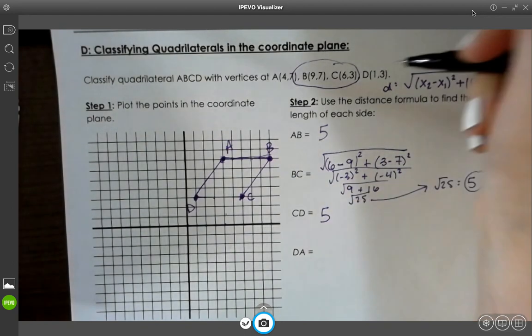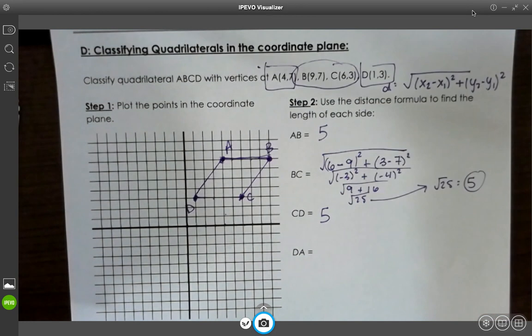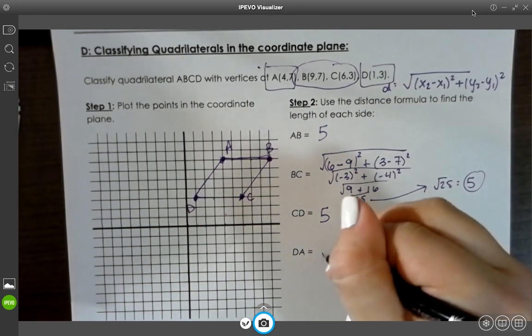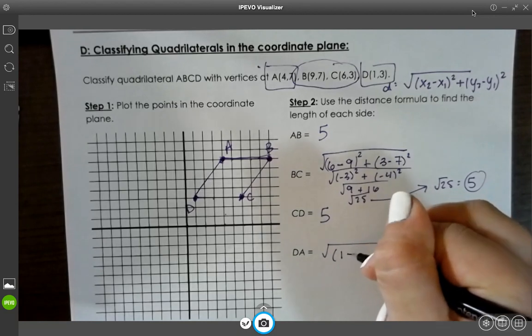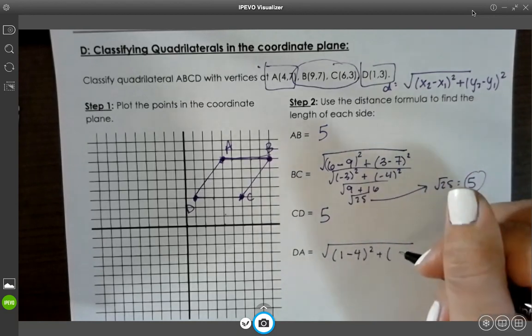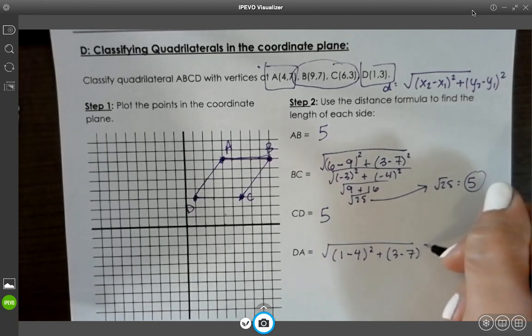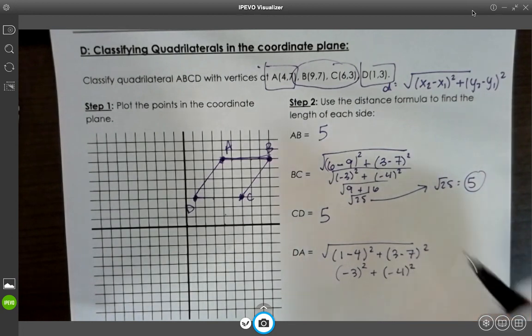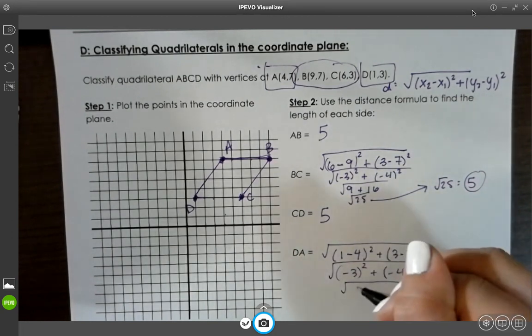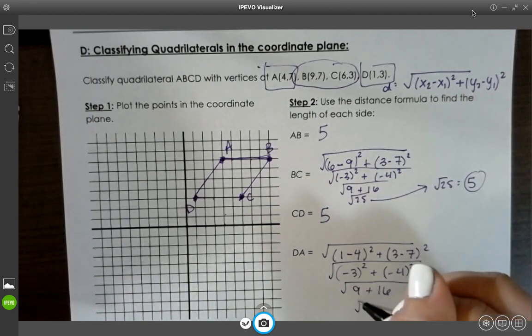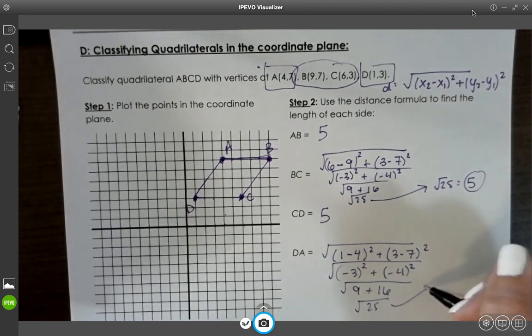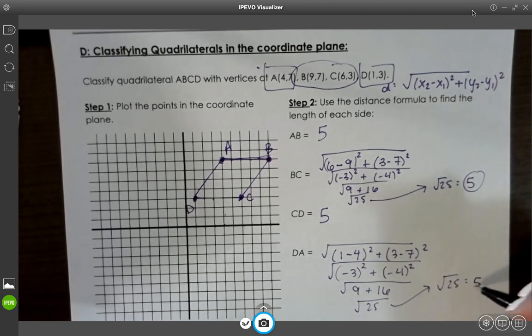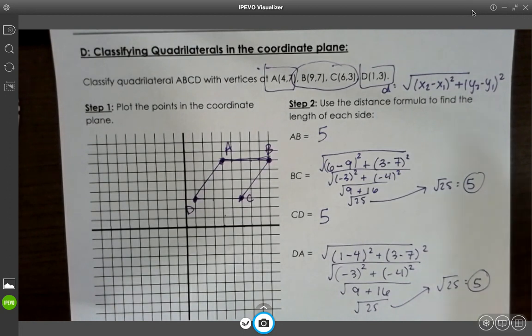So I know the length of BC is 5. And then for DA, I will use this one, D and A. So we have x2 minus x1 squared plus y2 minus y1 squared. Negative 3 squared, negative 4 squared, 9, 16. And we have square root of 25 again, which is 5.